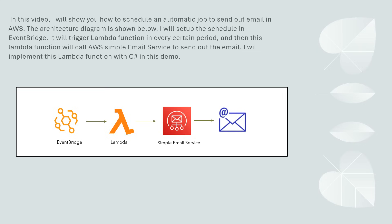Hello. In this video, I will show you how to schedule an automatic job to send out email in AWS. The architecture diagram is shown below. I will set up the schedule in AWS EventBridge. It will trigger a Lambda function every certain period, and then this Lambda function will call AWS Simple Email Service to send out the email.